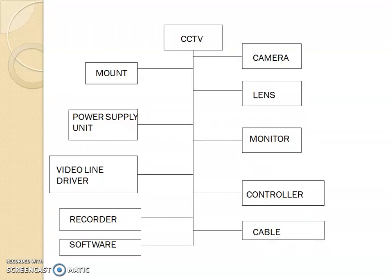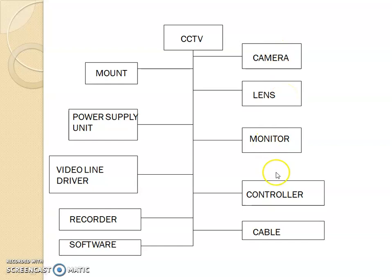If you look at the components of CCTV, you have a mount, power supply unit, video line driver, recorder, software, camera, lens, monitor, controller, and cable. All these are components related to CCTV and I will be explaining each one of them in detail.